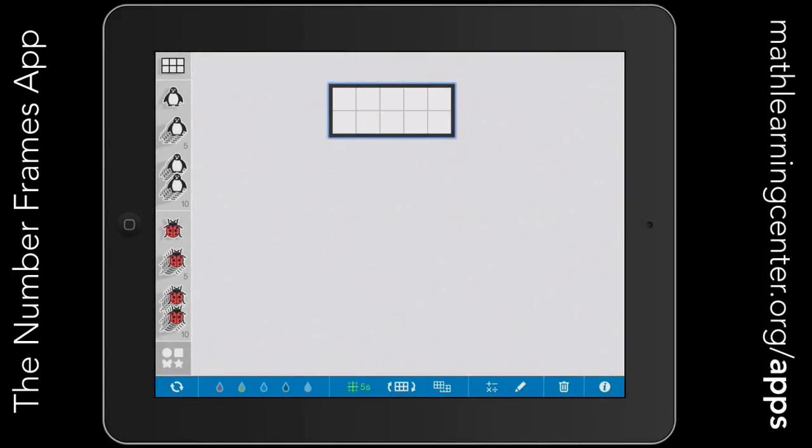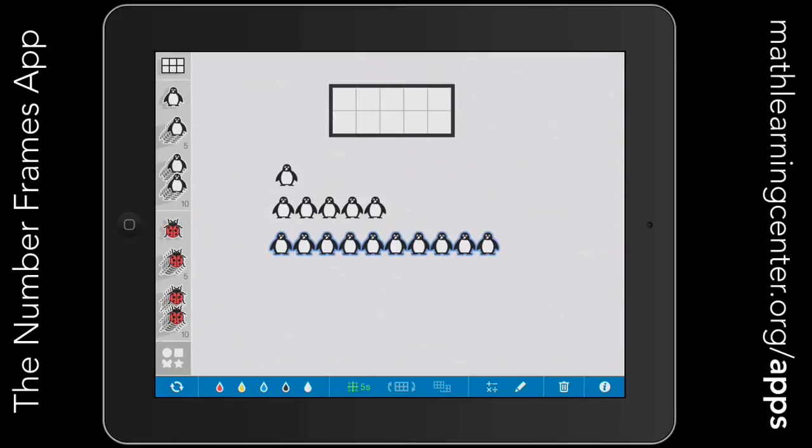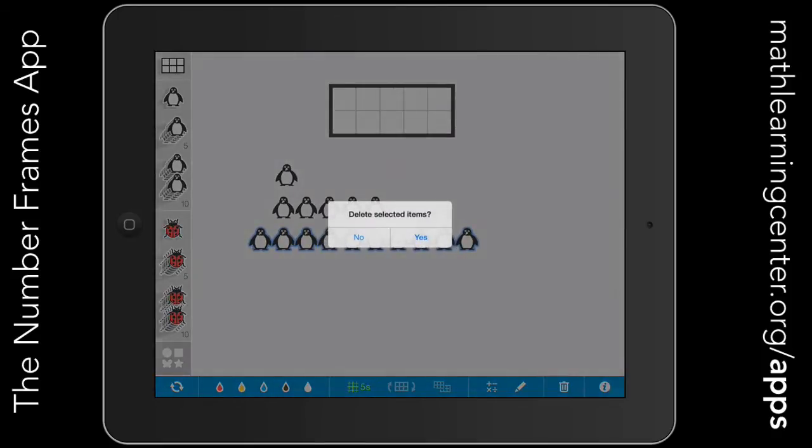The counters can be dragged into the workspace in three different increments: one, five, or ten. You'll notice that the counters also have the blue outline, meaning that they are also selected. And you can do things like move them around or delete them by tapping the trash can.